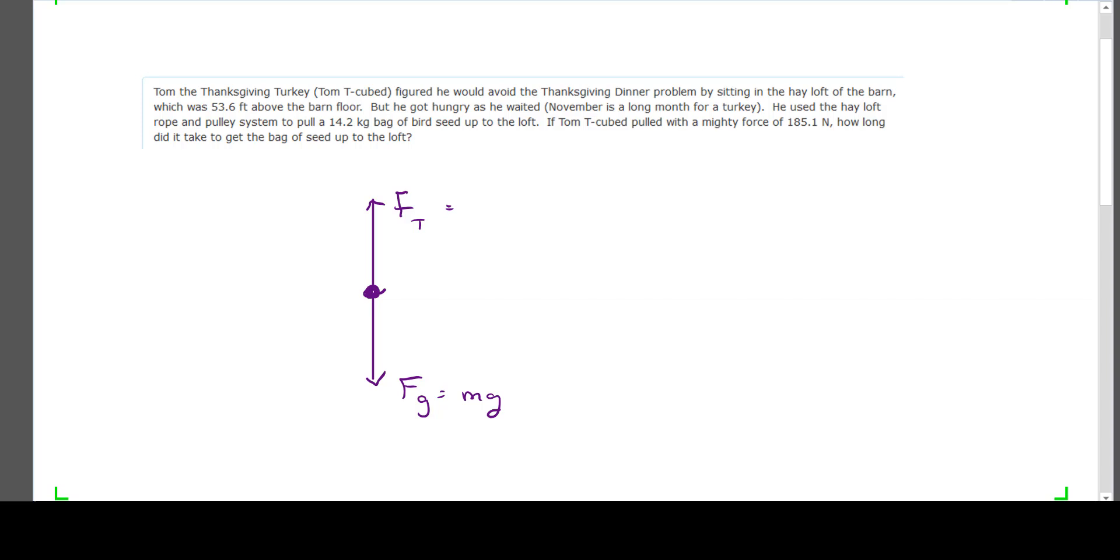First, free body diagram. There are only y forces: force of tension, because he's pulling on a rope, and the pull is 185.1 newtons. And of course, the force of gravity, which you're going to figure out using mg. We're trying to find the time it takes to get it to the loft. We know the distance is equal to 53.6 feet, we'll have to work with that later.